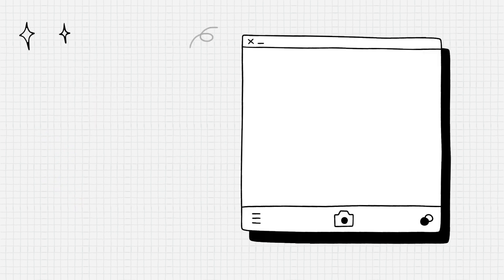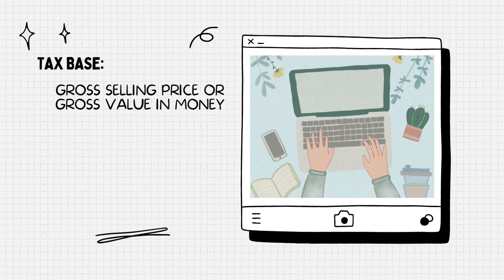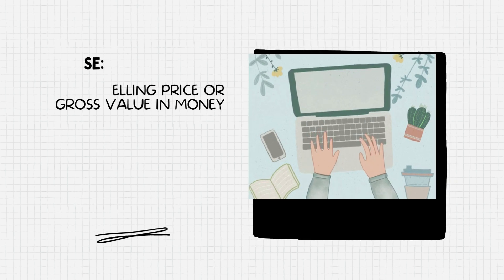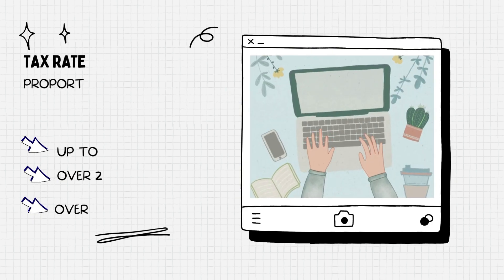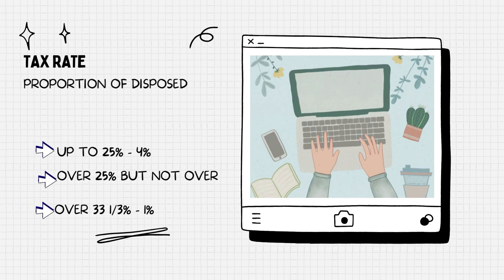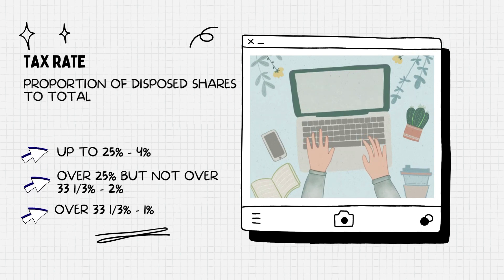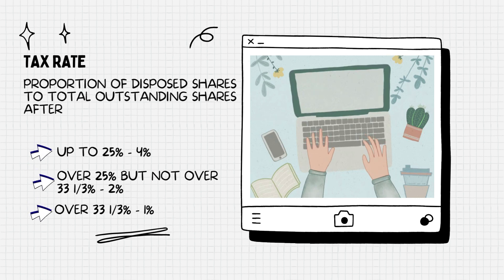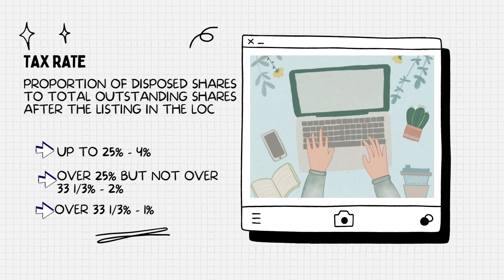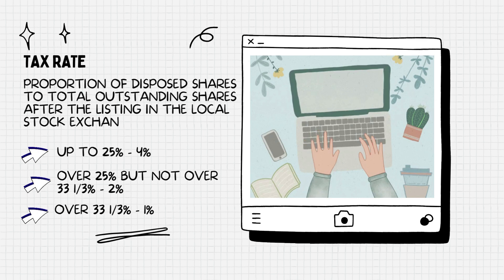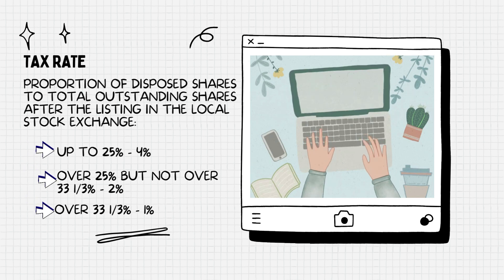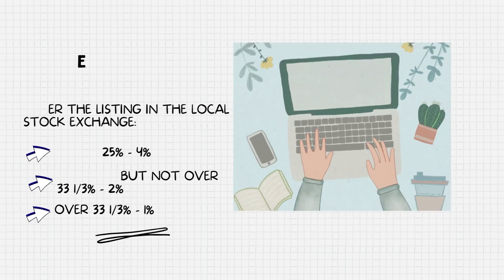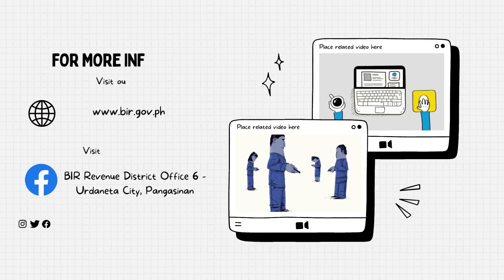The tax base is gross selling price or gross value in money. Tax rates are based on the proportion of disposed shares to total outstanding shares after listing in the local stock exchange: up to 25% is 4%; over 25% but not over 33 and a third percent is 2%; and over 33 and a third percent is 1%.